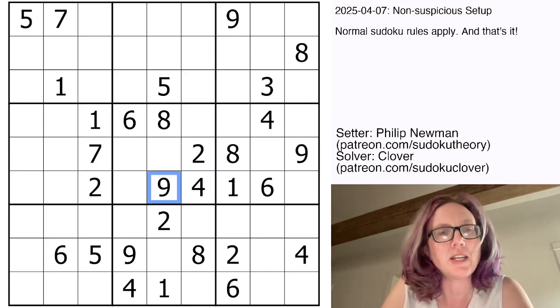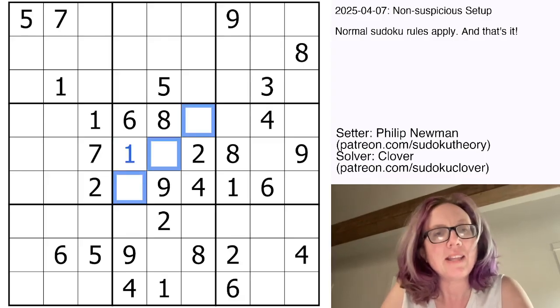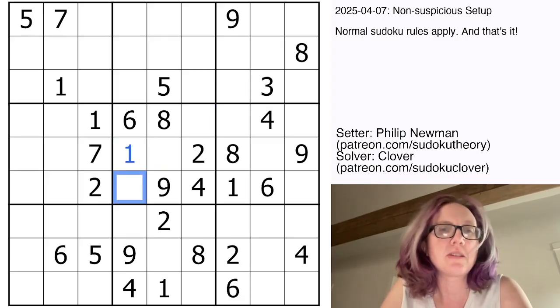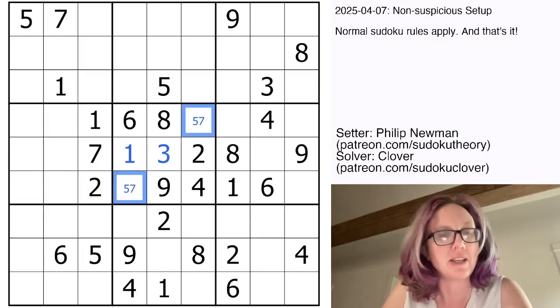So the first thing I see is a hidden 1 right here. There's only one place for a 1 in this region. That leaves me with 3, 5, and 7 to place in this region. This cell in the middle already sees 5 and 7, so that's going to be a 3. And I can mark these as 5 and 7.